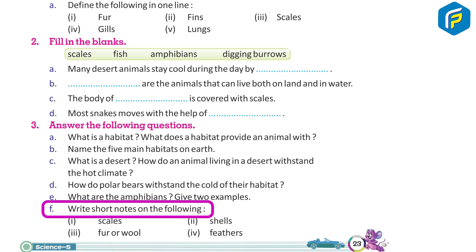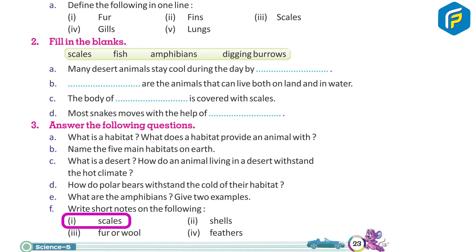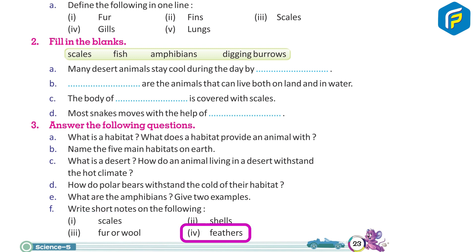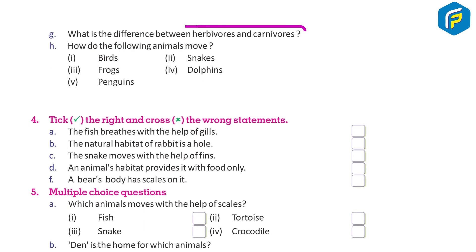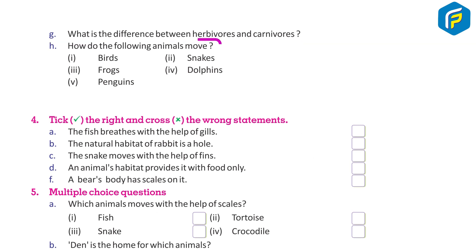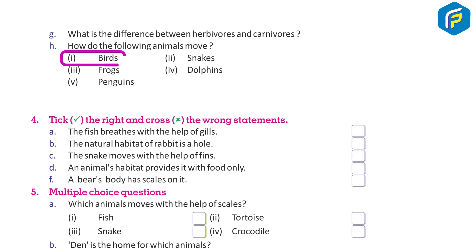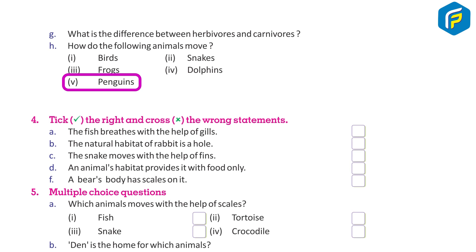Write short notes on: 1. Scales, 2. Shells, 3. Fur or wool, 4. Feathers. What is the difference between herbivores and carnivores? How do the following animals move? 1. Birds, 2. Snakes, 3. Frogs, 4. Dolphins, 5. Penguins.